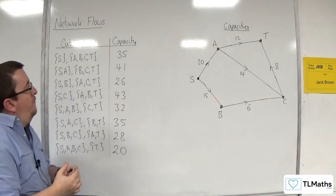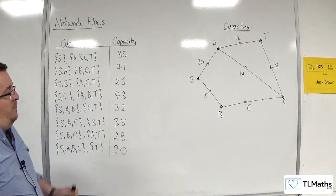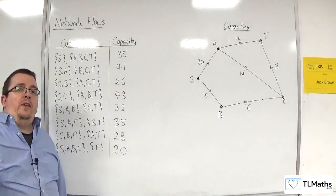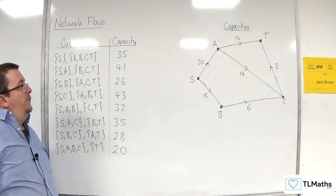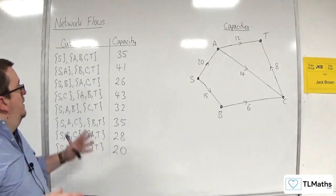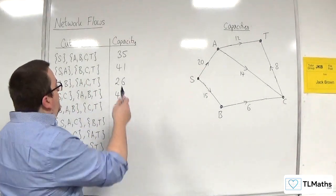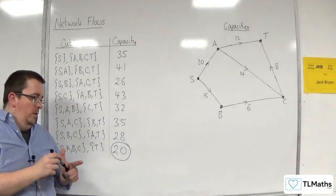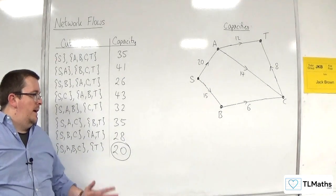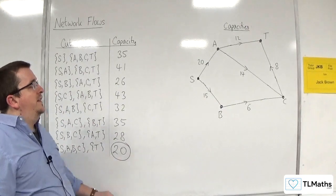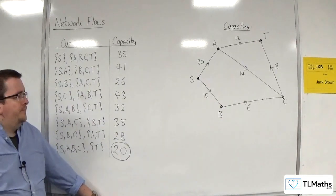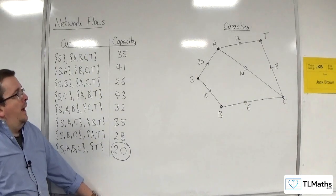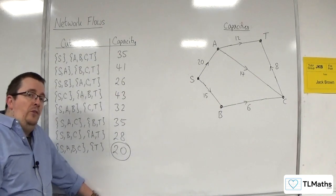The reason we've found the capacity of all the possible cuts is because there is a theorem that tells us the maximum flow through a network is equal to the minimum cut. So the minimum possible cut tells you what the maximum flow is. The maximum flow through this network is 20.